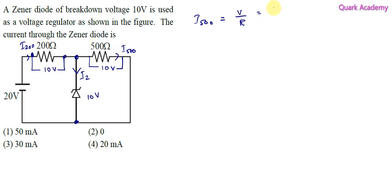Here V is 10 volts and R is 500, so we'll get 1 by 50 amperes. In the same way, we can find current passing through 200 ohm: V by R. In this case, V is 10 and R is 200, so we'll get 1 by 20 amperes.